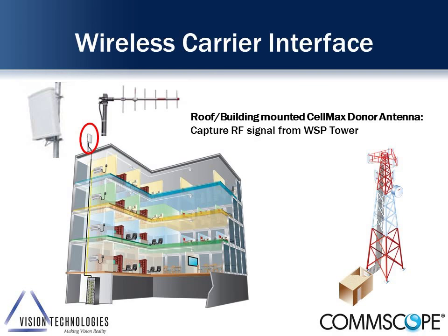The first option is putting an antenna on the roof, pointing it towards the cell site, and bringing that signal in from the outside — the macro network. Be advised, though: many enterprise clients think they can put one antenna on the roof and bring in signals from all carriers, but it doesn't work that way. We need donor antennas for each respective carrier — that's a very important consideration. Keep in mind we're also sharing the signal with the outside network.